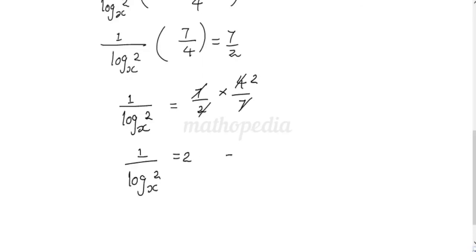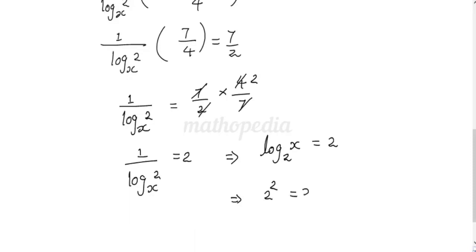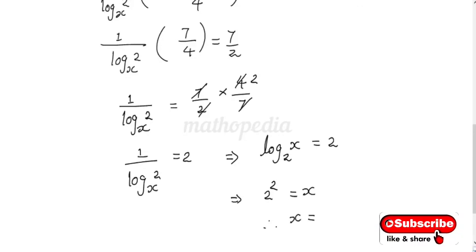Now, again applying the change of base rule, we get log x base 2 is equal to 2. This implies, writing this in exponential form, we get 2 power 2 equal to x. Therefore, x is equal to 4.